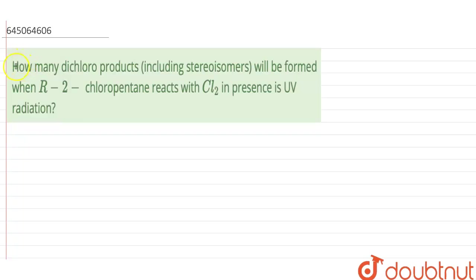Hello everyone, so in this question it is given that how many dichloroproducts including stereoisomers will be formed when R-2-chloropentane reacts with chlorine in presence of UV radiation.